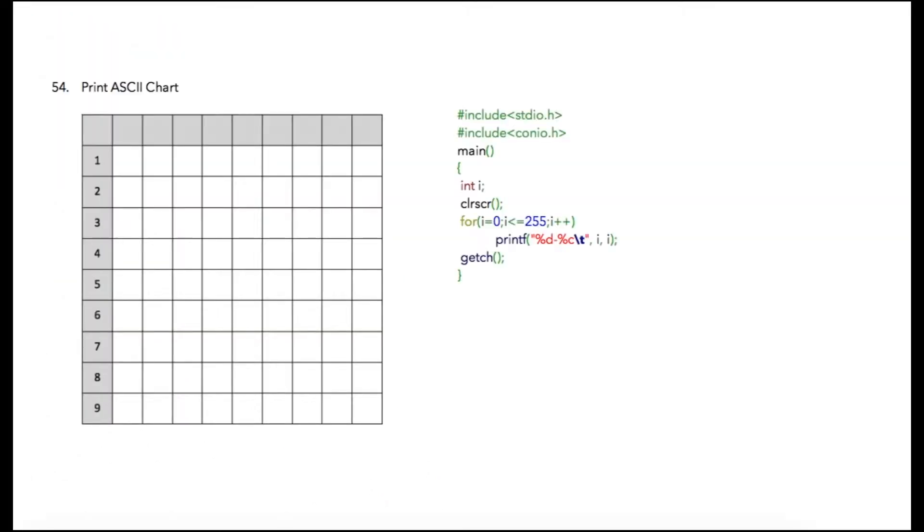In the next program, we are going to print all the ASCII chart on your output screen. We know that basic ASCII values start from 0 and end at 255. I'm using a variable i inside of a for loop which will start from 0 and go till 255.